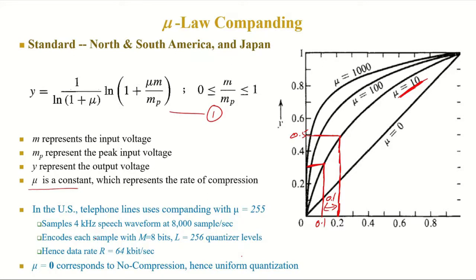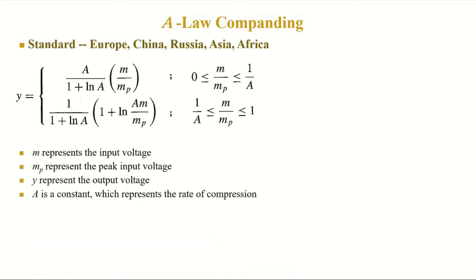In the United States, telephone lines use mu-law companding with mu equal to 255. As speech signals are restricted to a 4 kHz band, 8000 samples per second are generated. With each sample encoded using 8 bits, we have 2⁸ = 256 quantization levels, and hence a data rate of 64 kbps is achieved.